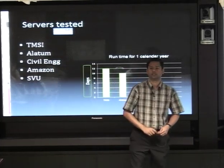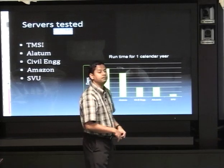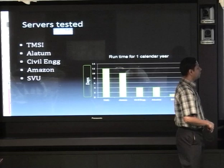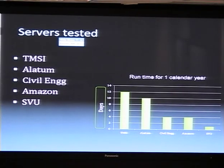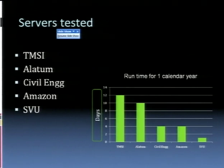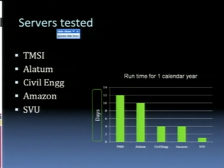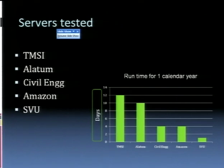The SVU cluster is the latest one we have from the computing center: a 16-node cluster with 12 processors each, about 192 processors, all connected by InfiniBand. The runtime for one calendar year at this resolution shows clearly in the graph. Our own cluster uses standard 1 GB Ethernet and takes about 12 days to run one year at the 10-kilometer domain. Alatom is about 10 days, civil engineering about four days, and Amazon is no better than our own cluster — so we decided, why pay them?